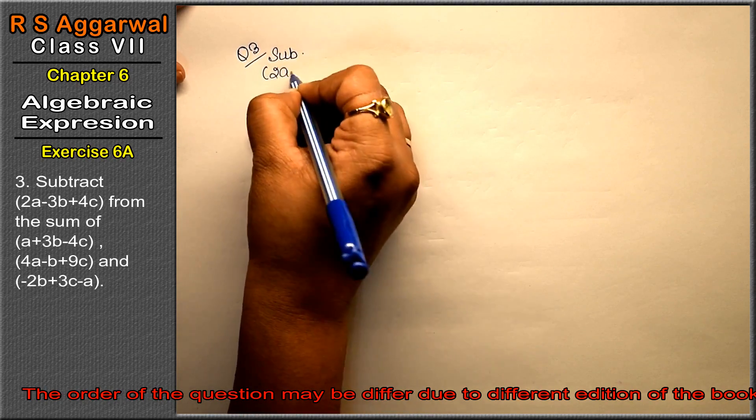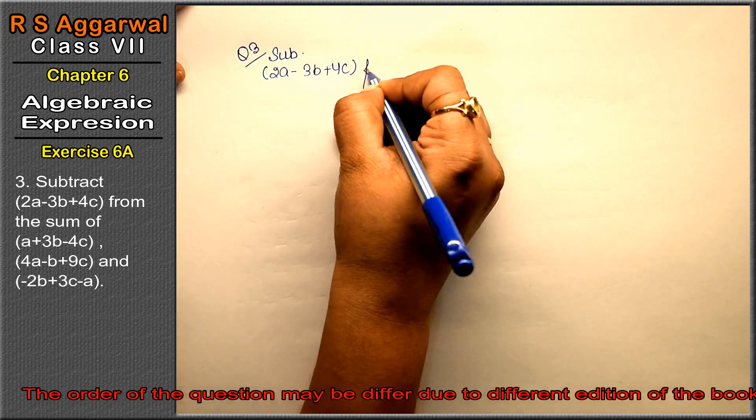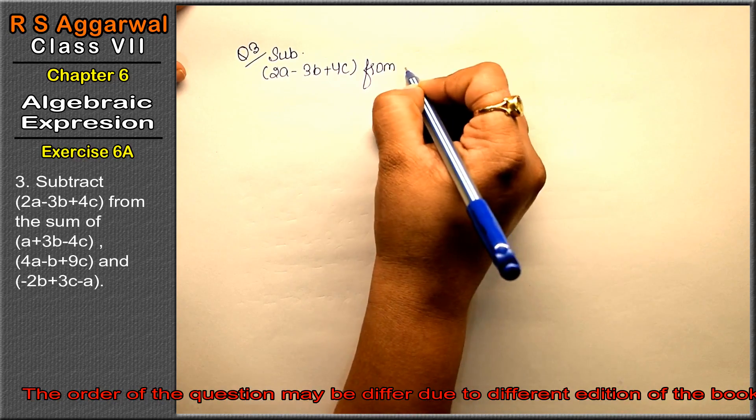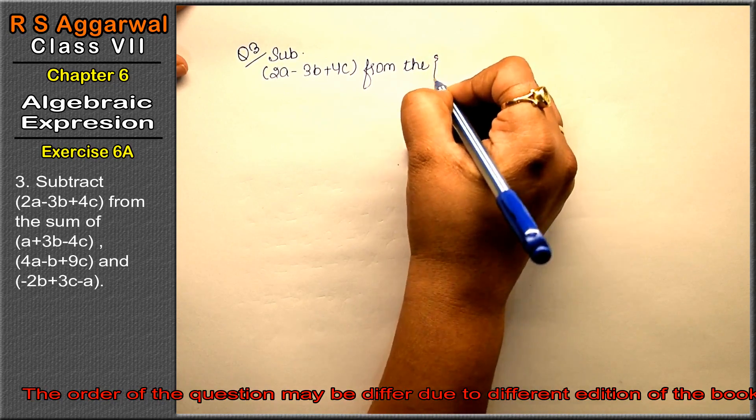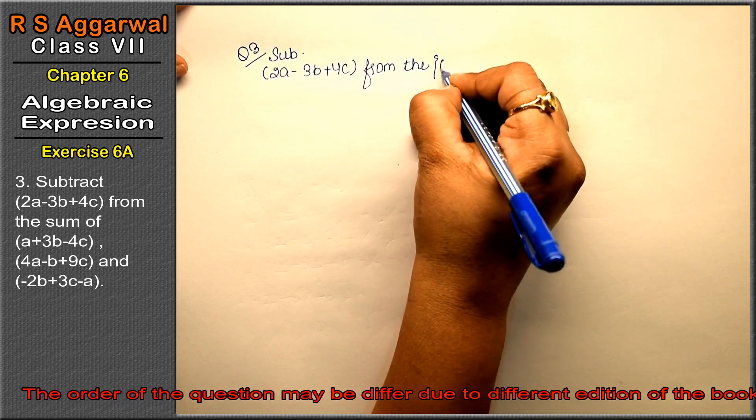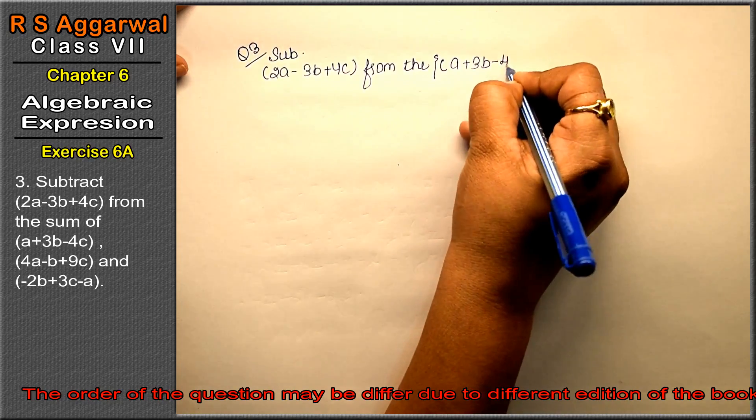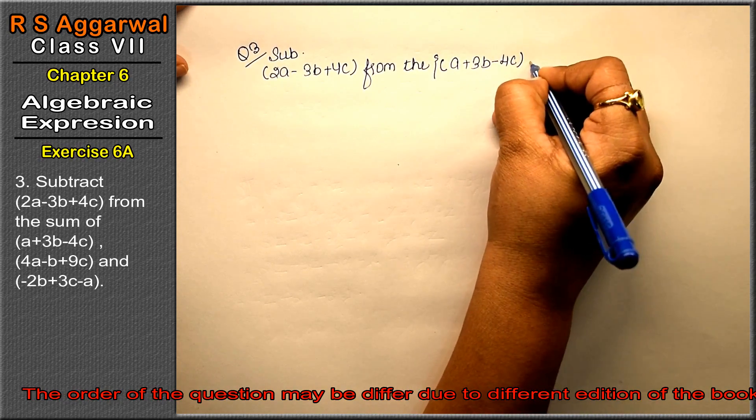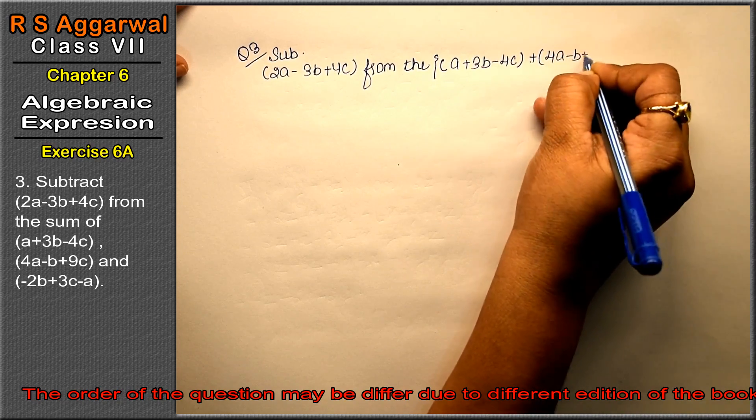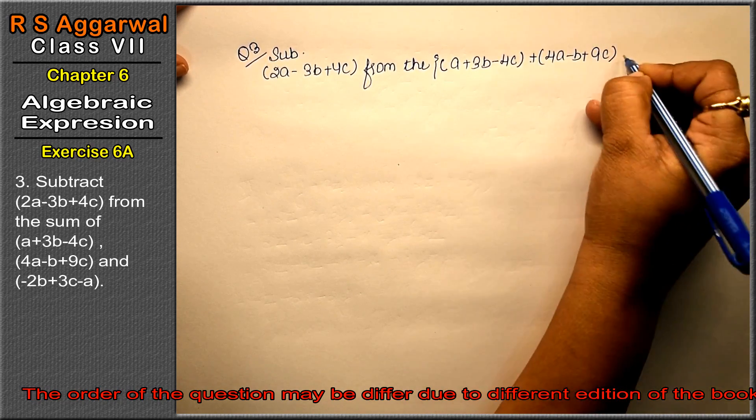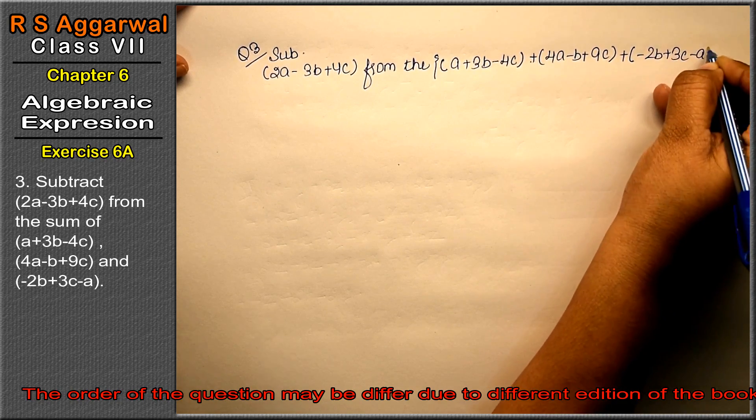2a minus 3b plus 4c from the sum. We need to find the sum. What is the sum of? a plus 3b minus 4c, plus 4a minus b plus 9c, plus minus 2b plus 3c minus a.